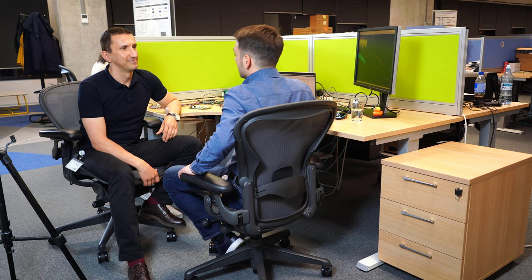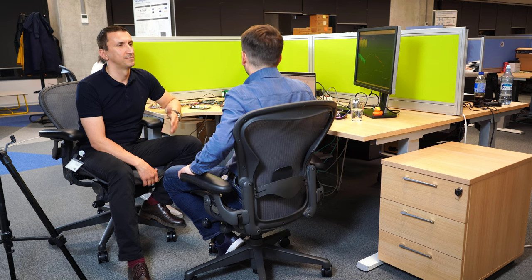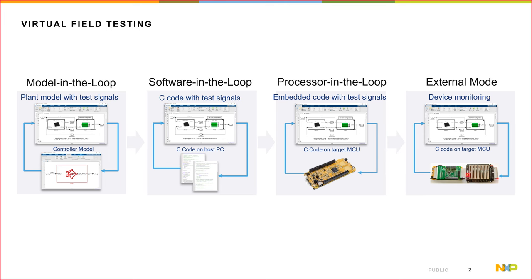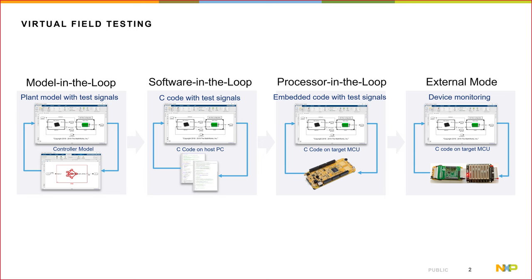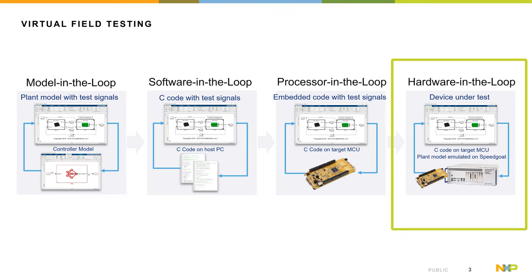We start with model-in-the-loop, then continue with software-in-the-loop, which generates C code out of the Simulink model. Then we go with processor-in-the-loop, where we run the algorithms directly on our processors — you don't need the high-voltage battery management unit, you can run that on evaluation boards. And later on, we show how to integrate all these devices for hardware-in-the-loop. So: model-in-the-loop, software-in-the-loop, processor-in-the-loop, and finally hardware-in-the-loop.